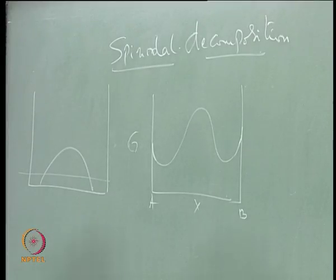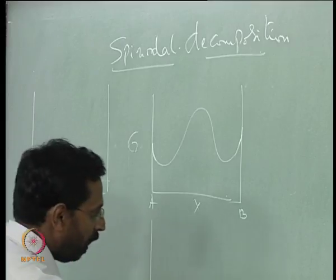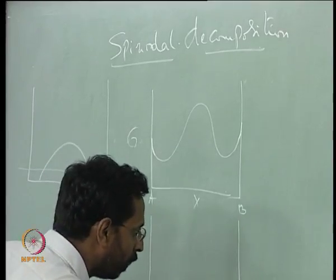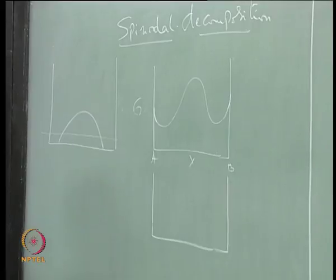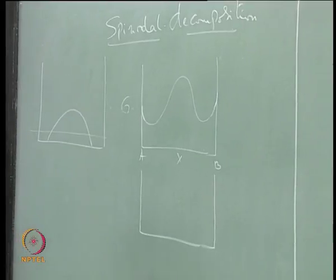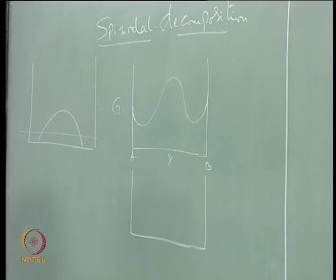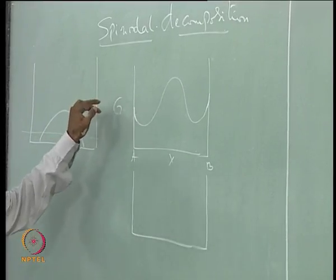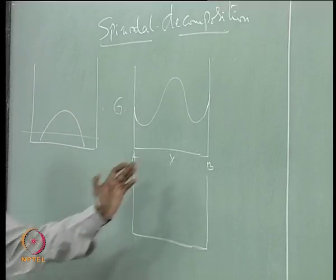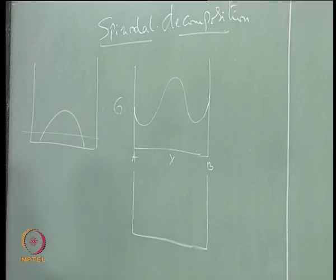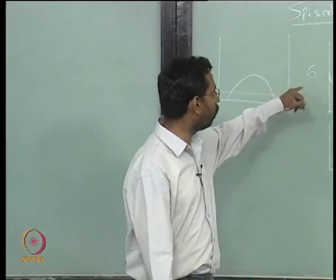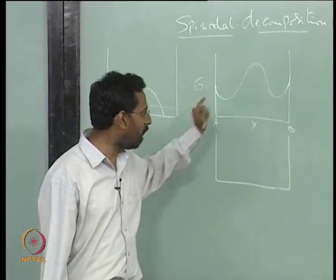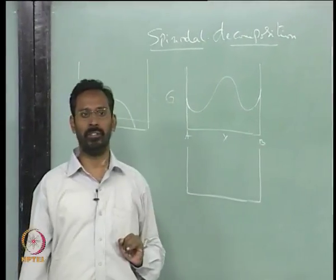We will understand spinodal decomposition better if we try to see what are the first and second derivatives of this free energy. Let us look at the first derivative — basically, we are looking at what is the slope of this curve as a function of composition, and how the slope is changing as a function of composition.